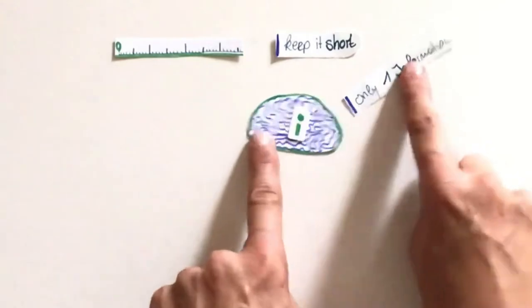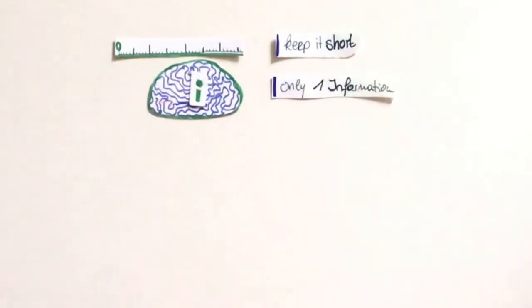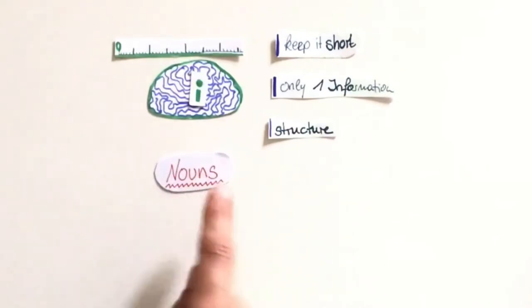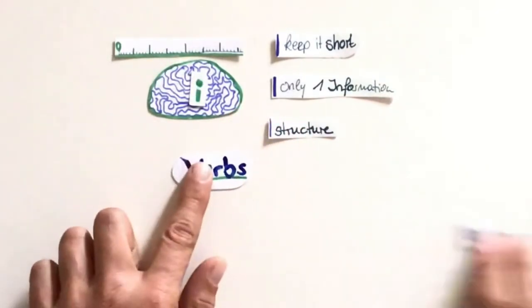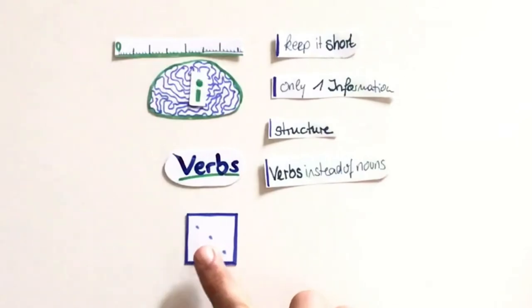To make yourself understandable, you need to have a good structure. Simple language consists of fewer nouns and more verbs. And if we can picture something, it makes it even easier to understand.